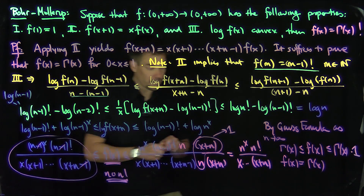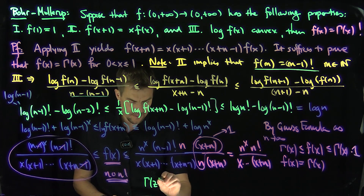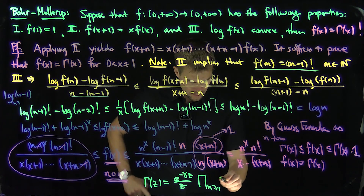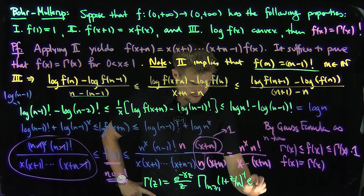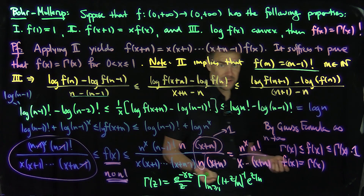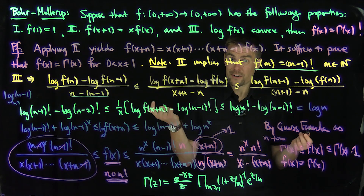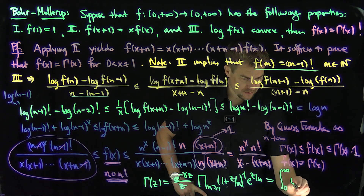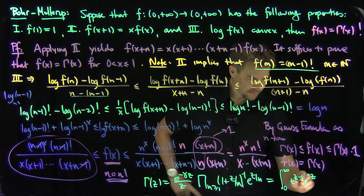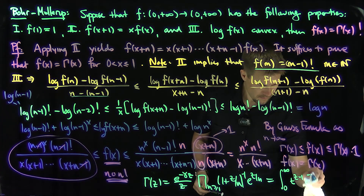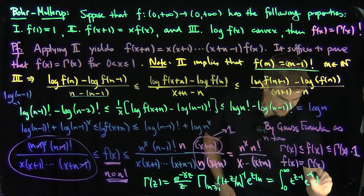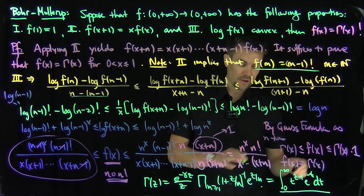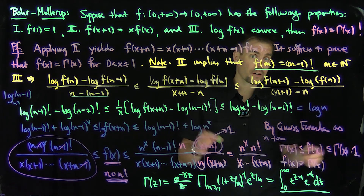The Bohr-Mohler-Rub Theorem is important because, recall, we had the Weierstrass infinite product formula: Γ(z) = e^(−γz)/z · ∏_{n≥1} (1 + z/n)^(−1) · e^(z/n). From differential equations we know the gamma function on the real line, and by analytic continuation we can extend it. This must equal the integral ∫₀^∞ t^(z−1) e^(−t) dt whenever it converges. Both representations will be used in our discussion of the Riemann zeta function.